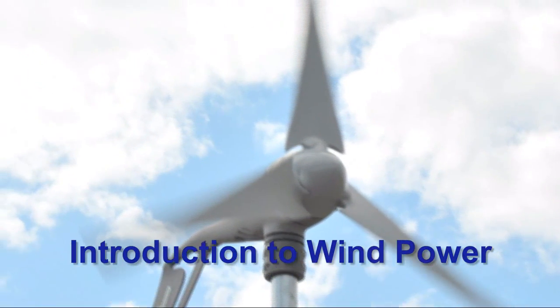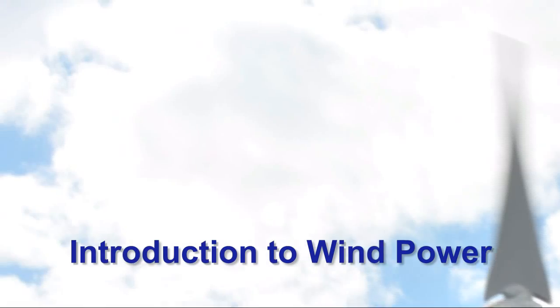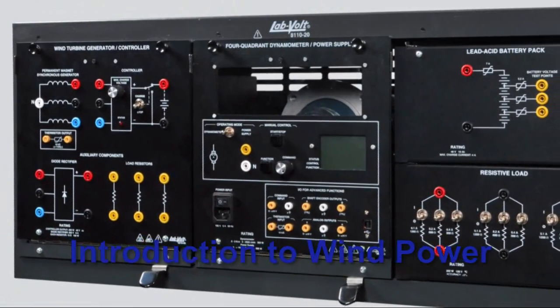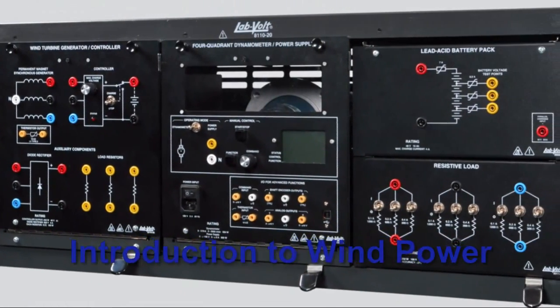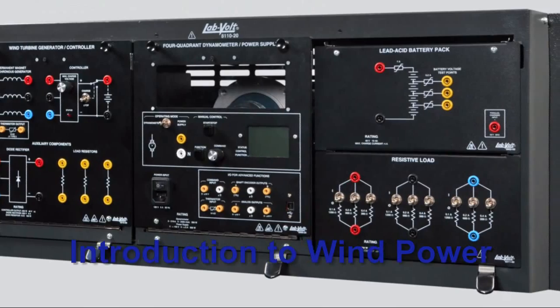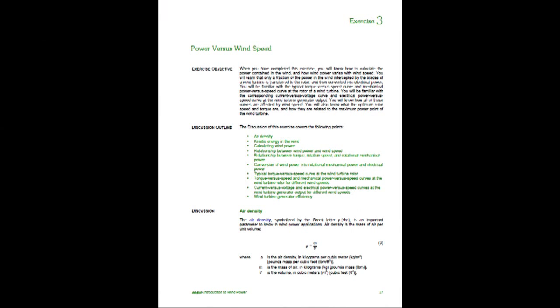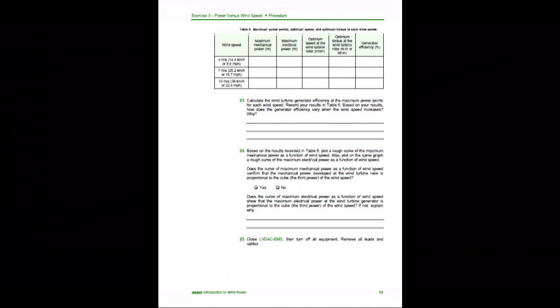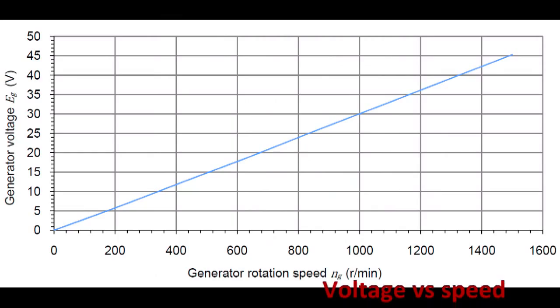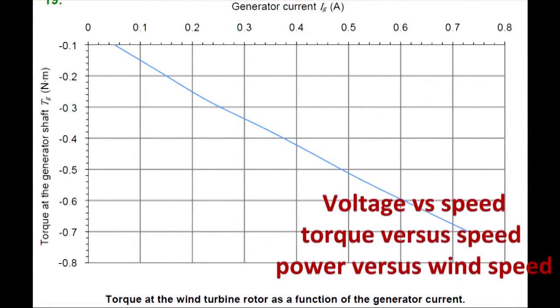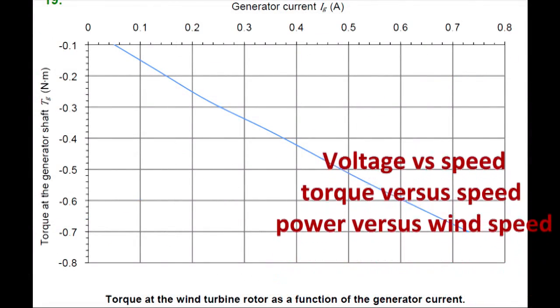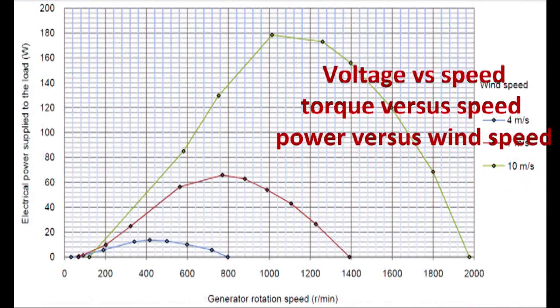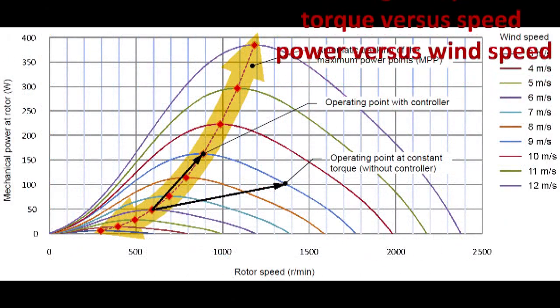LabVault's Small Scale Wind Power Electricity Generation Training System is an alternative solution for classroom-based teaching of wind power and wind turbines that allows teaching wind power parameters and generators. The full-color student manual includes all the theory needed, as well as step-by-step procedures for experiments on voltage versus speed of wind turbine generators, torque versus speed of wind generators, and power versus wind speed.